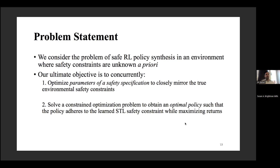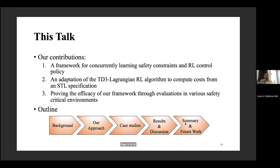To summarize: in addition to learning a policy, we want to learn a safety constraint on the fly — that is the problem statement. From this point, I want to talk a bit about the mathematics. I know it can be a little boring in a presentation, but I'll try to minimize the notation and convey the point of the joint learning clearly.